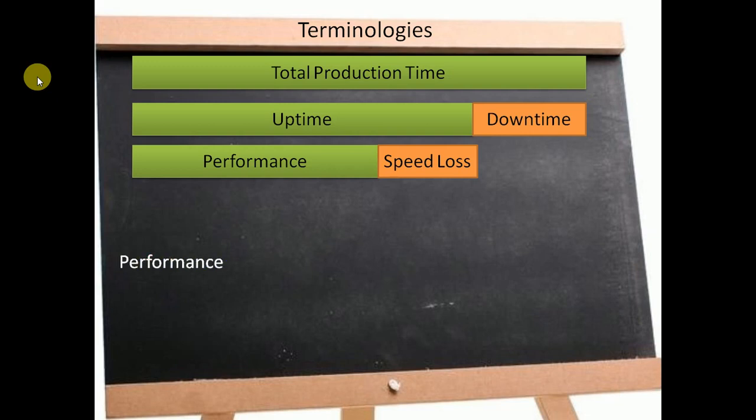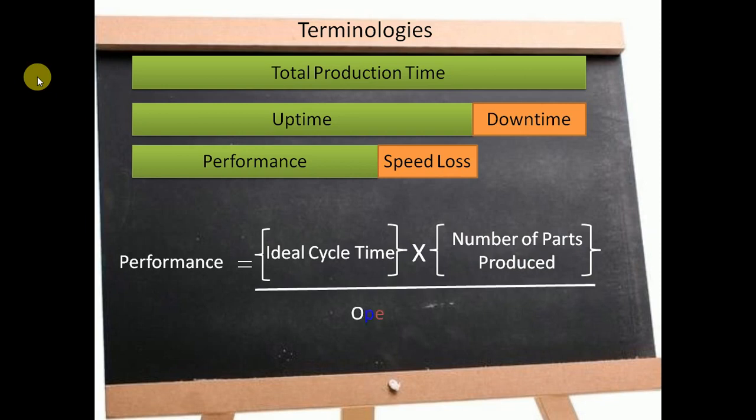It is mathematically calculated as the ratio of the ideal cycle time, that is the time required to manufacture one product with one pass with zero rework and zero rejection, multiplied by the total number of parts produced in a given period of time, divided by the operating time, that is nothing but uptime. Thus, performance is a portion of uptime which is completely dedicated for production.